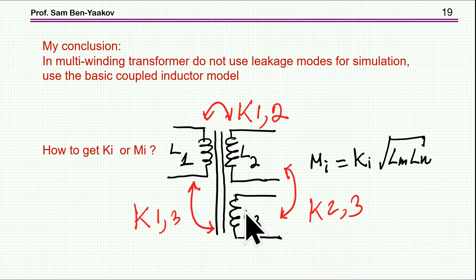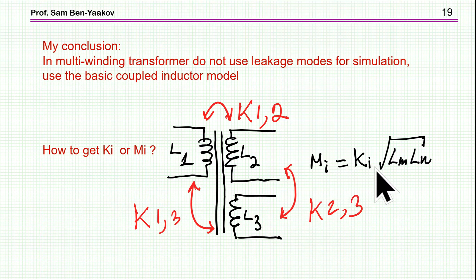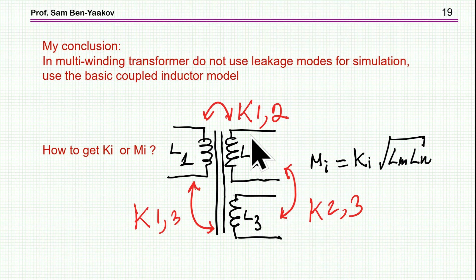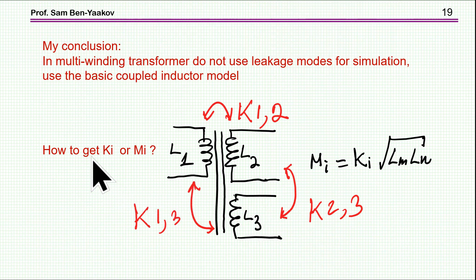The question is how do you get the coupling coefficient — or the mutual inductances, which are the same since they are related by the equation: mutual inductance equals the coupling coefficient times the square root of the product of the two winding inductances. You need the coupling coefficient between each pair of windings, treating each as a two-terminal network with two windings only.